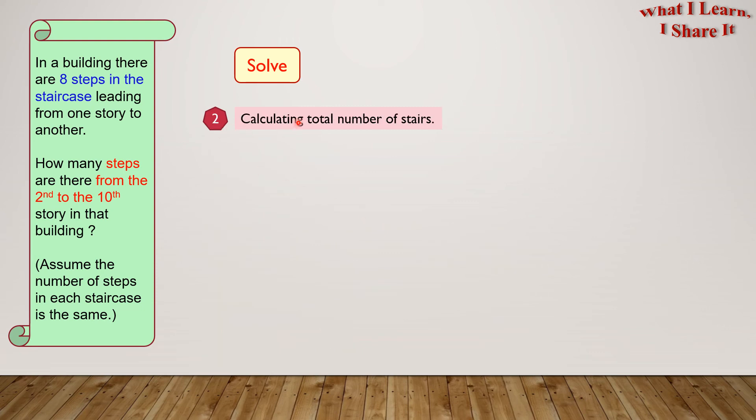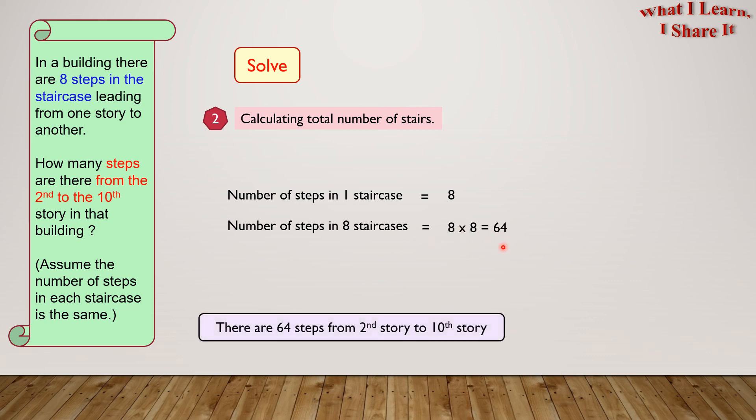Now let's calculate the total number of stairs. The number of steps in one staircase is 8, and the number of steps in 8 staircases will be 8 times 8 equals 64. So there are 64 steps from the second story to the tenth story.